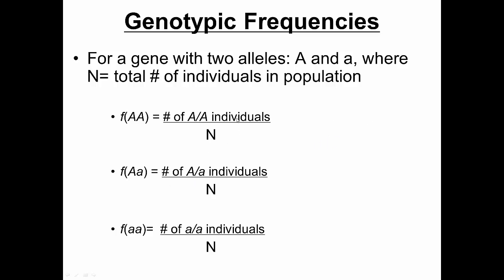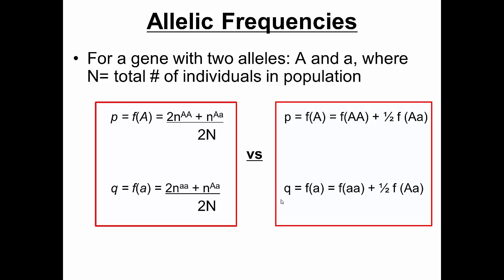We're also going to figure out the frequency of heterozygotes in the population: the number of heterozygote individuals divided by the total. Similarly, the frequency of homozygous recessives is the number of homozygous recessive individuals divided by the total. These give us the frequencies of individuals of each genotype in the population, and we can multiply by 100 to get the percentage.